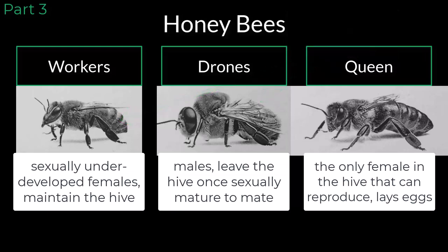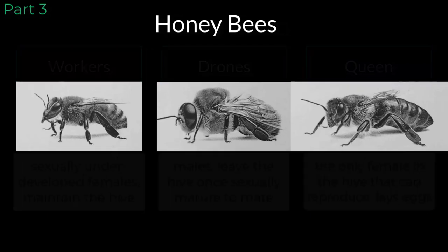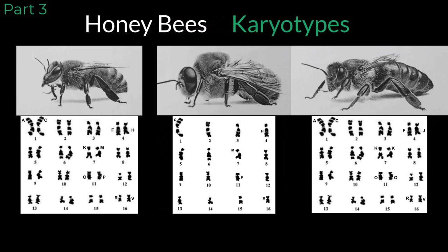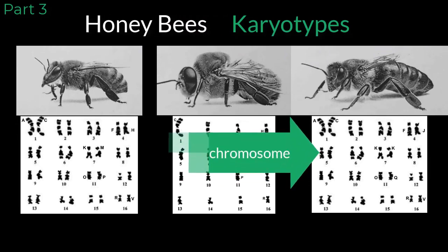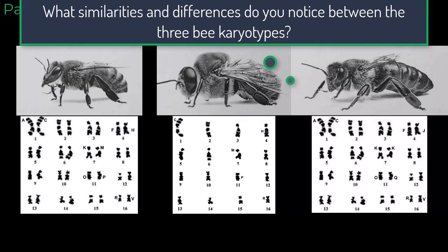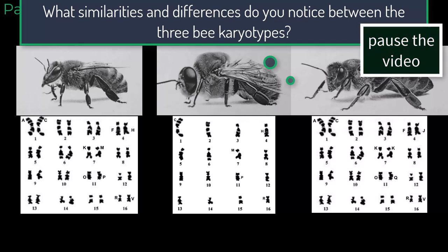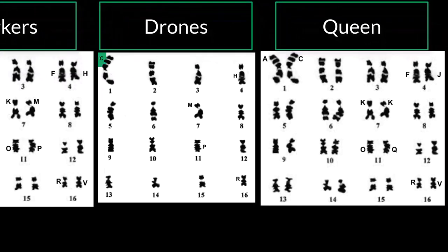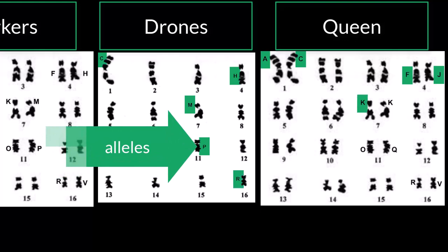An interesting thing about these three types of honeybees is that they share some similarities and some differences within their DNA. Let's take a look at the karyotypes of these three different bees. A karyotype is a picture of an organism's DNA. Each line on the karyotype is called a chromosome, which is a long strand of coiled up DNA. Take some time to identify and record the similarities and differences between the three karyotypes. On the karyotypes, you'll notice that several different genes or portions of the chromosomes have been labeled. Each gene has anywhere from three to six alleles. Alleles are different versions of a gene found at the same location. Each letter represents an allele or different DNA sequence that can be found at that specific chromosome location.